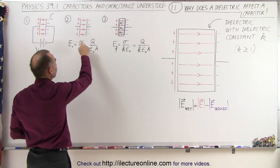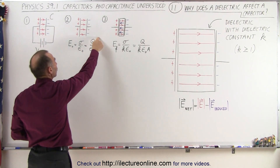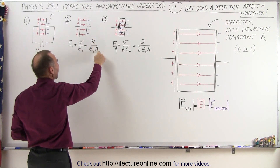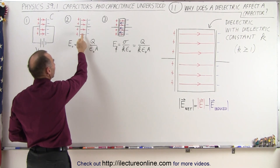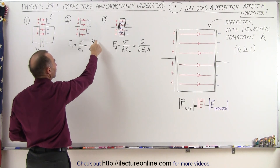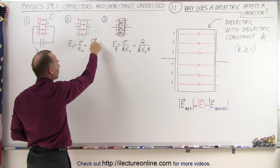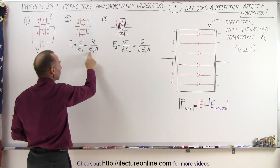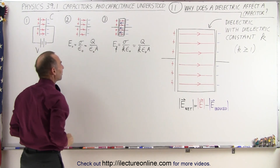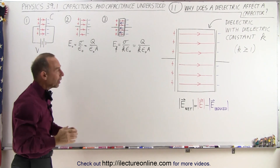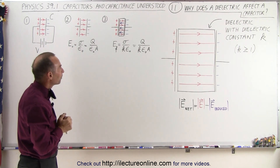We can say that the charge density is the charge divided by the area, so we can express the electric field between the plates as the charge divided by epsilon sub-naught — which is the permittivity of free space — divided by the area of the plates.